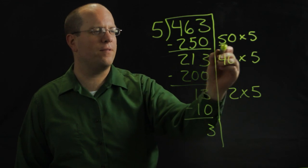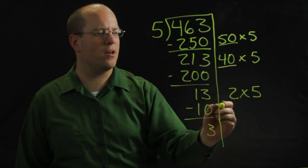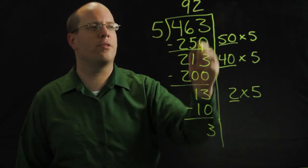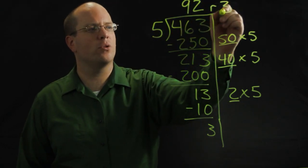So I've got 50 fives here and 40 fives here and two here. That's 92 fives, and I had three left over, so remainder three.